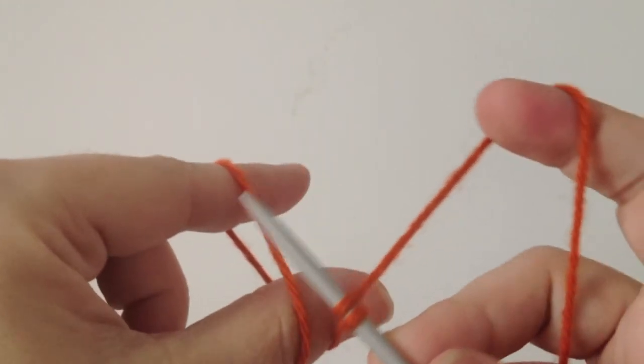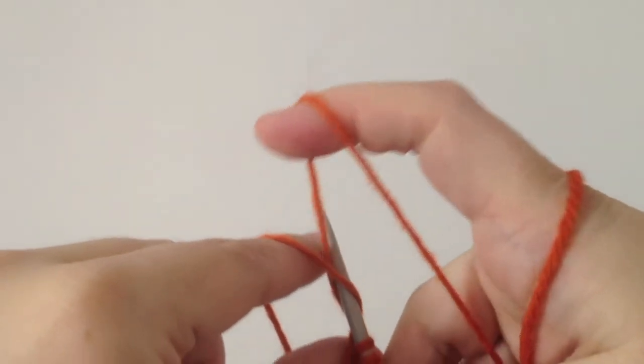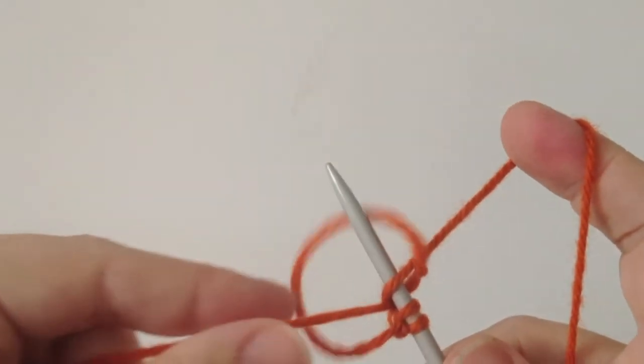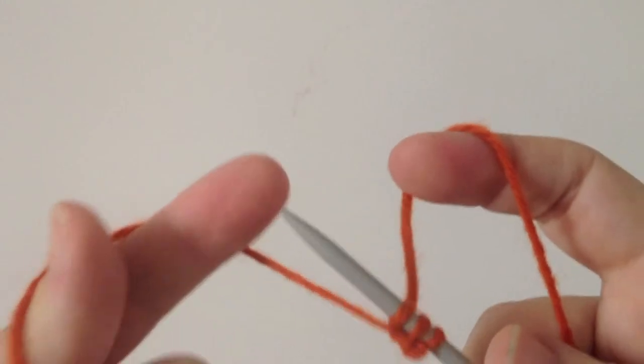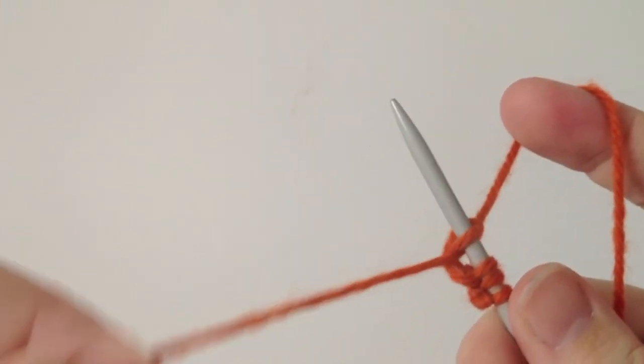So basically again, we take our needle and we put it through that loop, wrap around our working yarn which is attached to the ball, bring the needle down and up through the loop, and pull the tail.